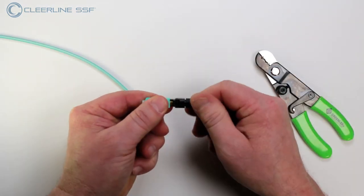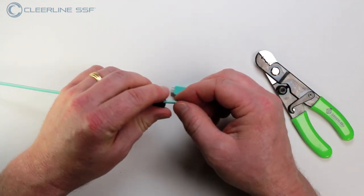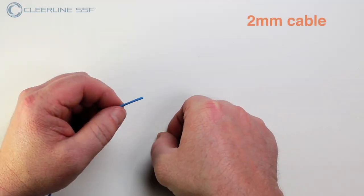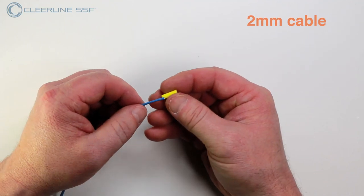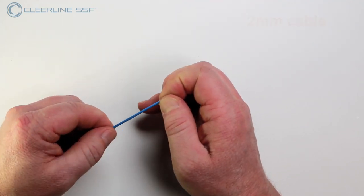Step 1. Unscrew the connector boot and slide onto the 2 or 3 mm cable jacket. If terminating 2 mm cable, slide the included yellow 2 mm build tube onto the 2 mm cable jacket.